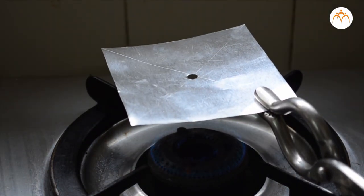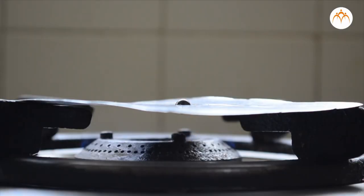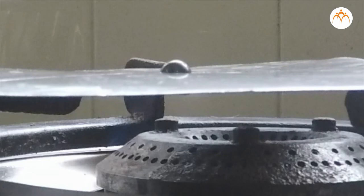Just like this rod, the sheet also expands on heating in all directions. After heating, the steel bulb easily goes through the hole. Try this with other metals also.